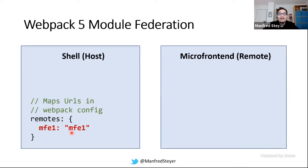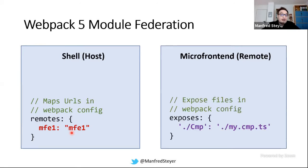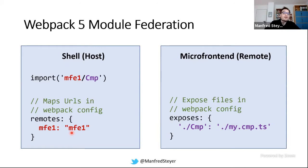Here I'm using a non-alias configuration — it's called MFE1 on both sides. Within your micro front-end, you can expose things. You can say: I'm exposing this component, this service, or this Angular module. Here I'm exposing a component and giving it the official name CMB. Then you can import something from over there using the mapped names — if you go with MFE1/CMB, you point over there and grab the component that has been exposed.